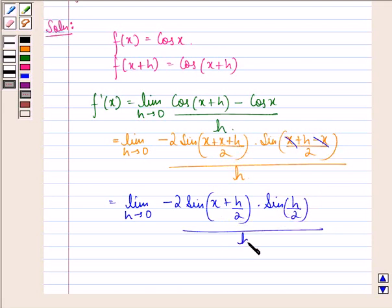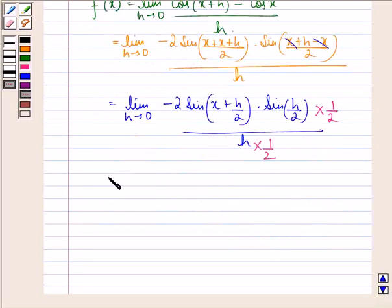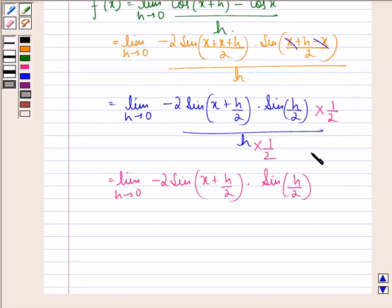Now we multiply the numerator and denominator by 1/2. We get limit h approaching 0, minus 2 sin[(x+h)/2] times sin(h/2). Now this 2 gets cancelled with this 2.